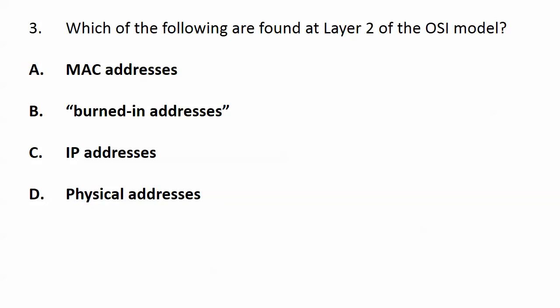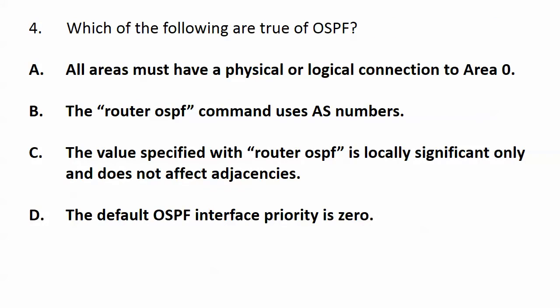Now stepping out of the OSI model and moving to OSPF. Which of these statements are true? A) Every area must have a physical or logical connection to area zero. B) The router OSPF command uses AS numbers. C) The value specified with the router OSPF command is locally significant only and does not affect adjacencies. D) The default OSPF interface priority is zero.